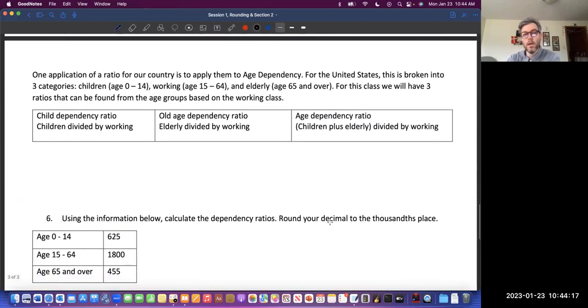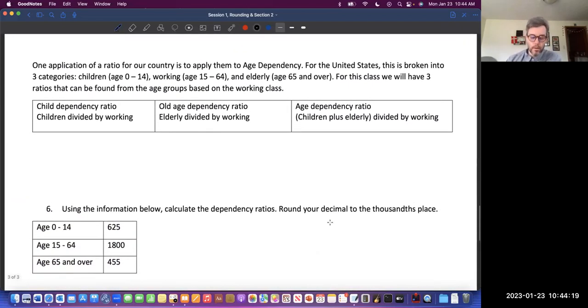Now, this is confusing. Child dependency ratio, old age dependency ratio, and age dependency ratio is most likely going to be the most difficult thing to comprehend. And of course, it's coming at the end, but hopefully I can explain it clear enough.